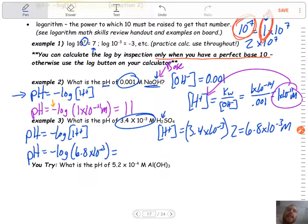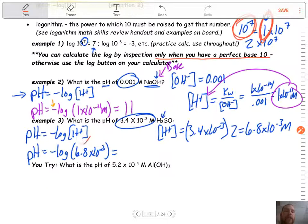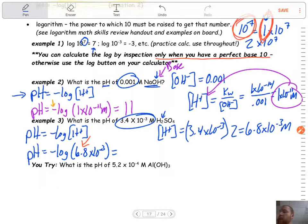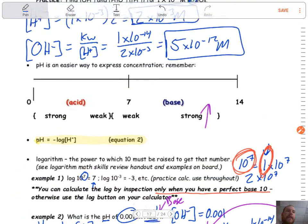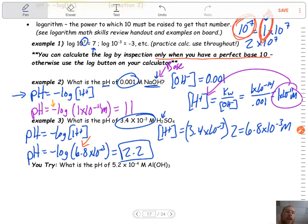Now I can take that number, plug it into my equation, negative log of 6.8×10^-3. Is this a perfect base 10? No. Only time you have a perfect base 10 is if the number out in front of the 10 is a 1. So you have to use the calculator here. When I get this, my answer is 2.2. That would be my pH. Think to yourself, is that a good pH for having an acid? Absolutely. It would be a stronger acid as well.